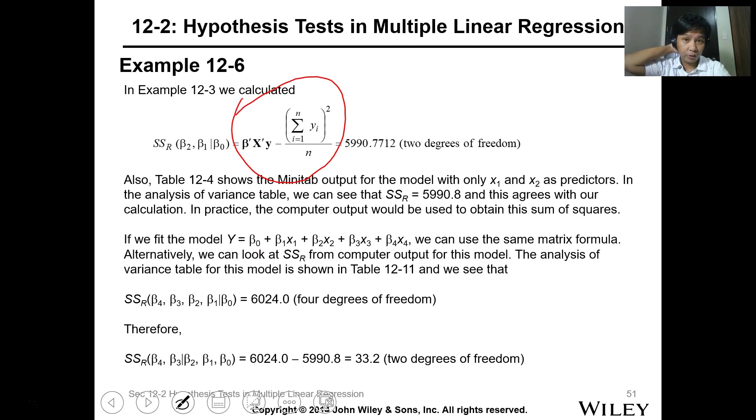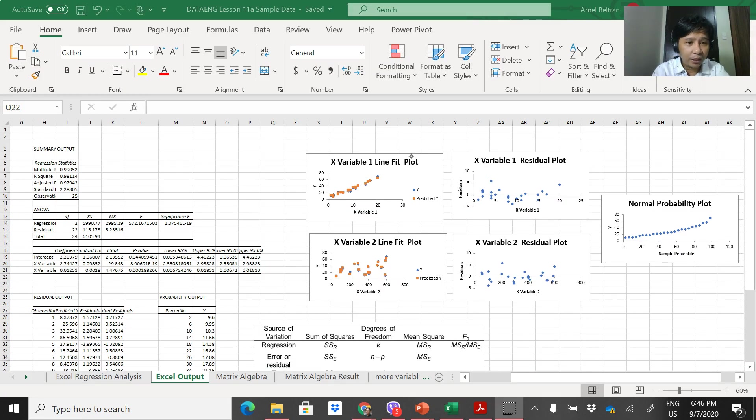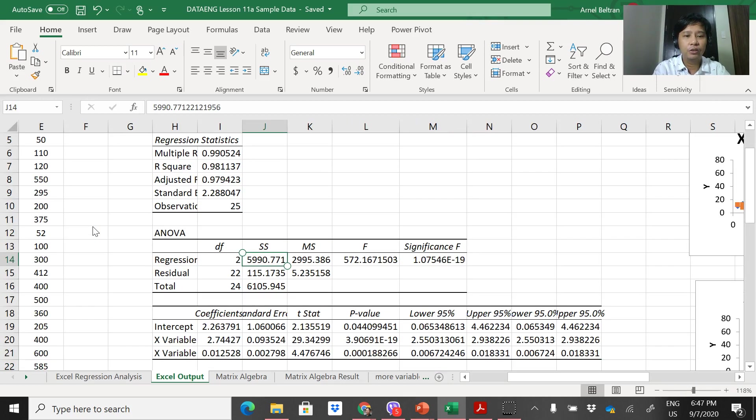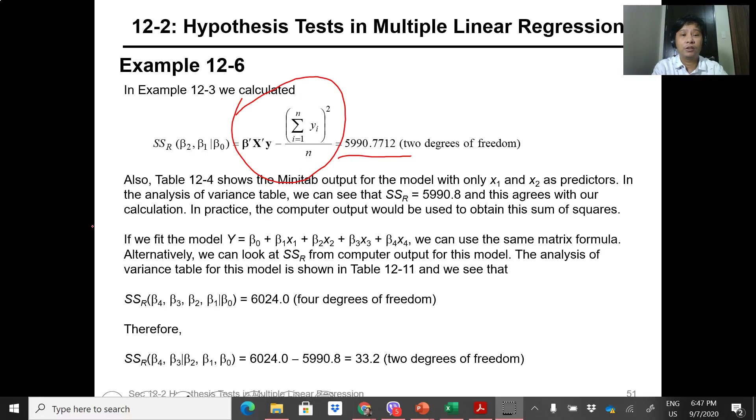The summation is 5990.771. That's in the original file. This is the SSR regression model - this is 5990.771 given β0.